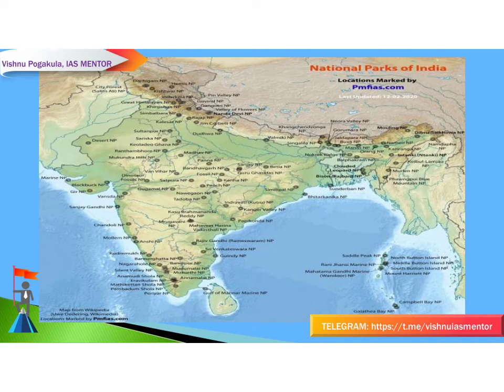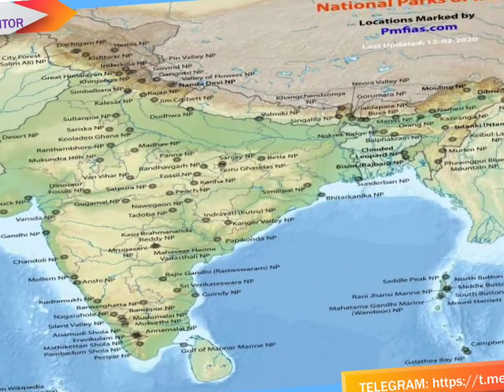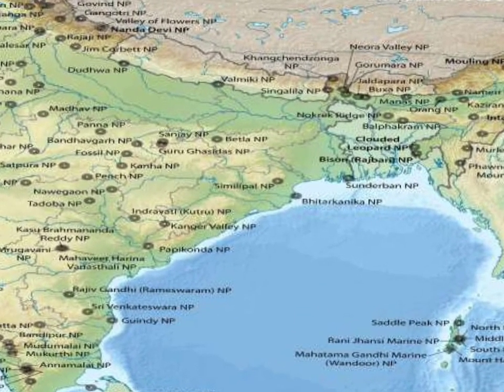Now let's see the national parks in Odisha. There are only two national parks in Odisha, so they are easy to remember: Simlipal National Park and Bhitarkanika National Park.